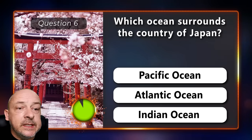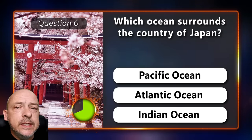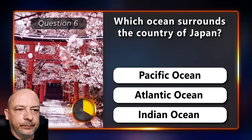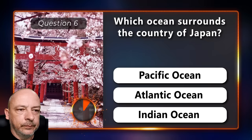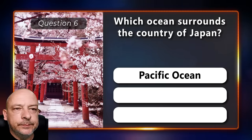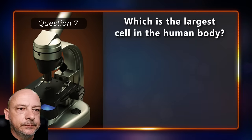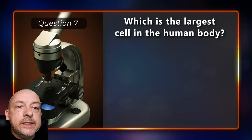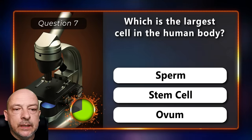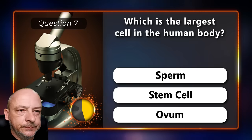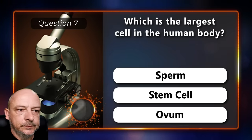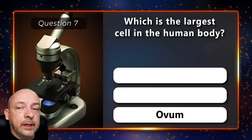Which ocean surrounds the country of Japan — the Pacific, Atlantic, or the Indian Ocean? Japan is in the Pacific Ocean. Which is the largest cell in the human body — the sperm cell, stem cell, or the ovum cell? The ovum.